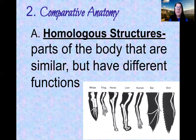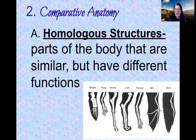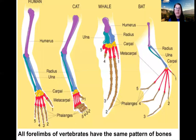Now we're to number two: comparative anatomy. Comparing the structure of animals has led to the discovery of homologous structures — parts of the body that are similar but have different functions. I'd like to draw your attention to the anatomy of a human arm, a cat's leg, a whale flipper, and a bat's wing. Imagine the different functions a human arm has compared to a cat's leg, a whale flipper, and a bat wing.